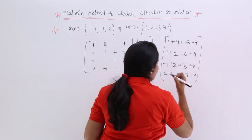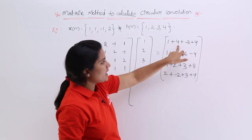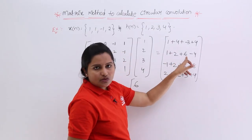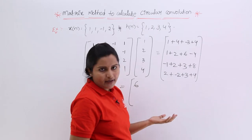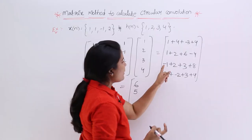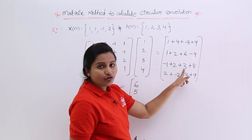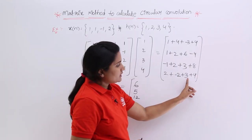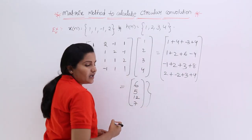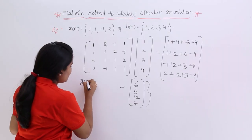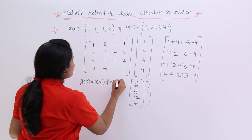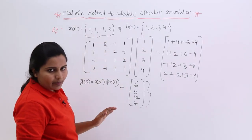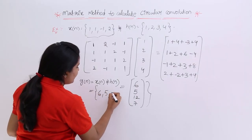Computing the results: first row gives 1 + 2 - 3 + 4 = 4, wait — 1 + 4 = 5, 5 - 3 = 2, 2 + 4 = 6. Second row: 1 + 2 + 3 - 4 = 5 — specifically 1+2=3, 3+3=6... giving 9 - 4 = 5. Third row: -1 + 2 + 3 + 8 = 12. Fourth row: 2 - 2 + 3 + 4 = 7. So the circular convolution result y(n) = {6, 5, 12, 7}.